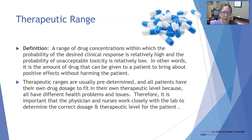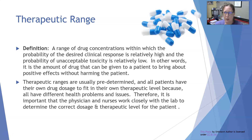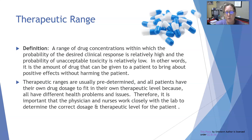A therapeutic range is a range of drug concentration within which the probability of the desired clinical response is relatively high and the probability of unacceptable toxicity is relatively low — above efficacy, below toxicity. It's the amount of the drug that can be given to a patient to bring about positive effects without harming the patient. We only do therapeutic drug monitoring in patients taking medications where the levels between therapeutic and toxic are very close and easy to cross.